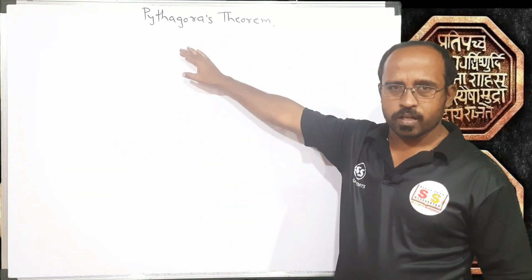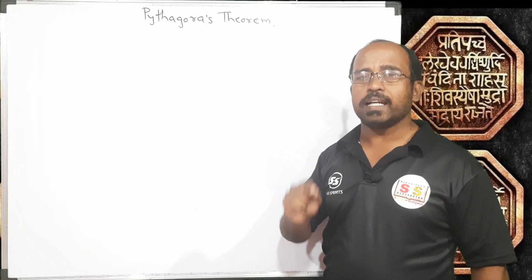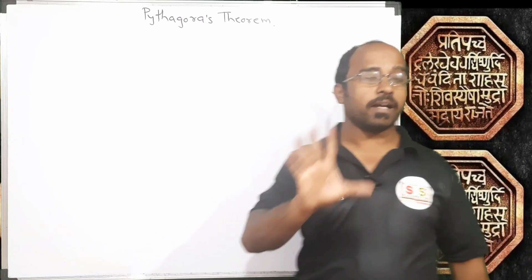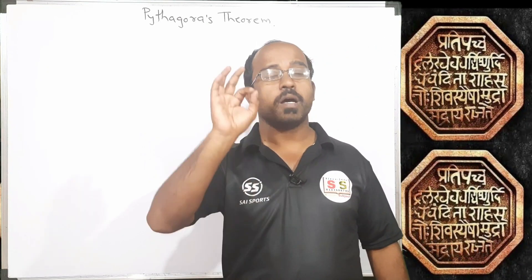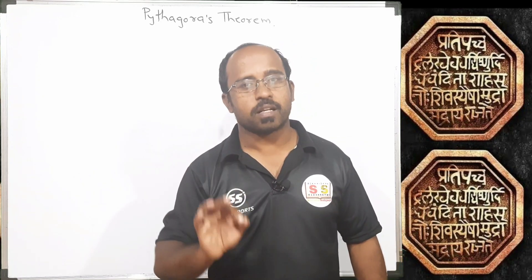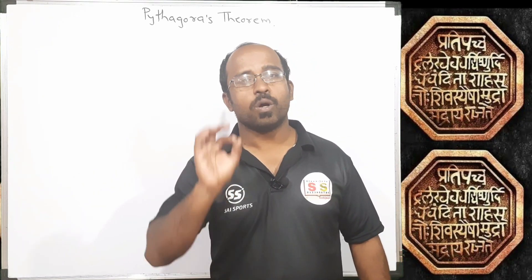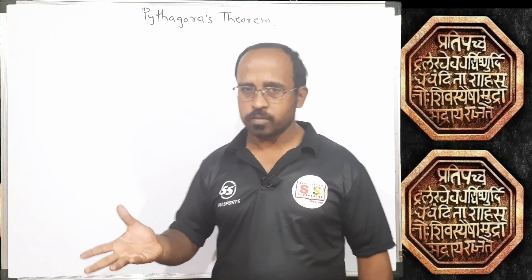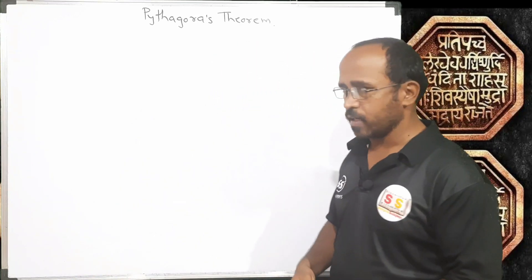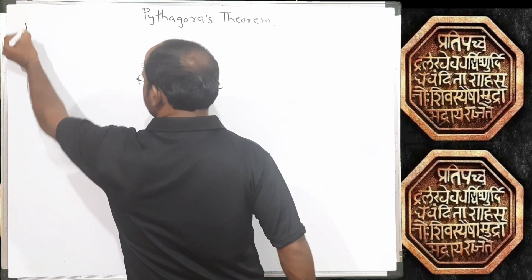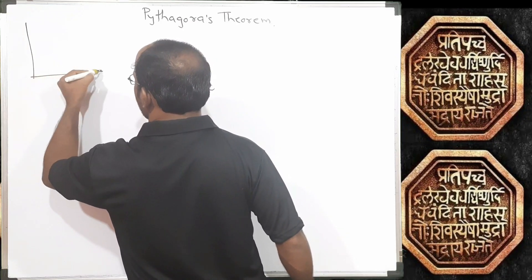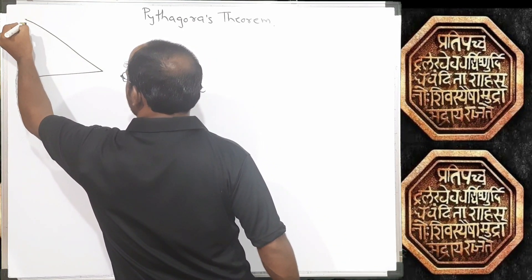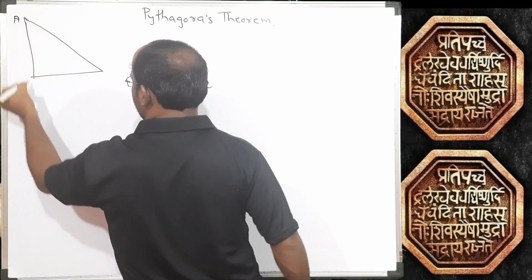First of all, remember this theorem is related with only right angle triangles. Please remember, Pythagoras theorem is related with only right angle triangles. If in any triangle one angle is 90 degrees, such a triangle is called a right angle triangle.